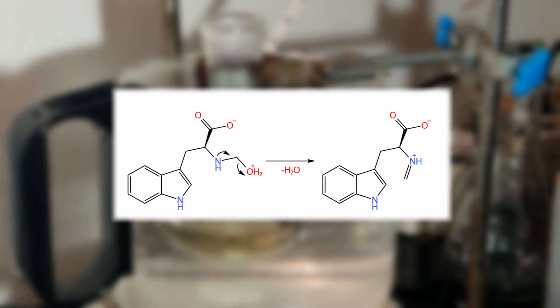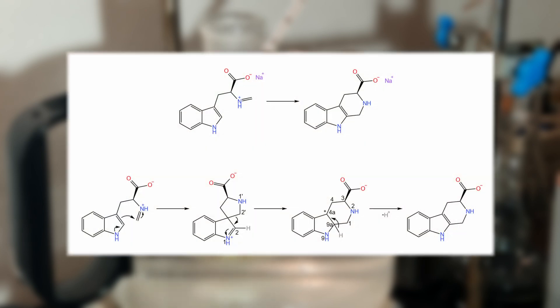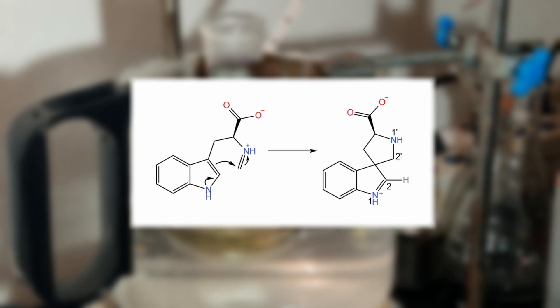In the second step, the imine cyclizes to form the tetrahydrocarboline. The indole-nitrogen lone pair forms a double bond, while the electrons of the 2-3 position pi bond attack the imine carbon and the electrons of the pi bond return to the nitrogen.